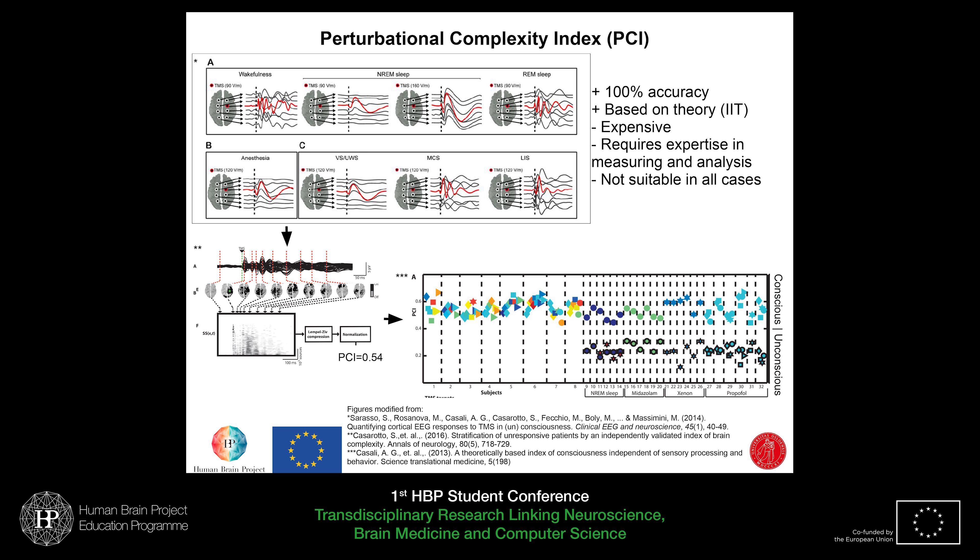The first measure is the Perturbational Complexity Index, which many of you have probably heard of. The gist of it is that you give a series of brief magnetic pulses and measure the neural response in the EEG to these pulses. You can do this in different states, like anesthesia, and you will see a different neural response each time. You take that data, compress it, and measure its compressibility to get a PCI score. When you plot the PCI scores for different states, you see a remarkable differentiation between them.